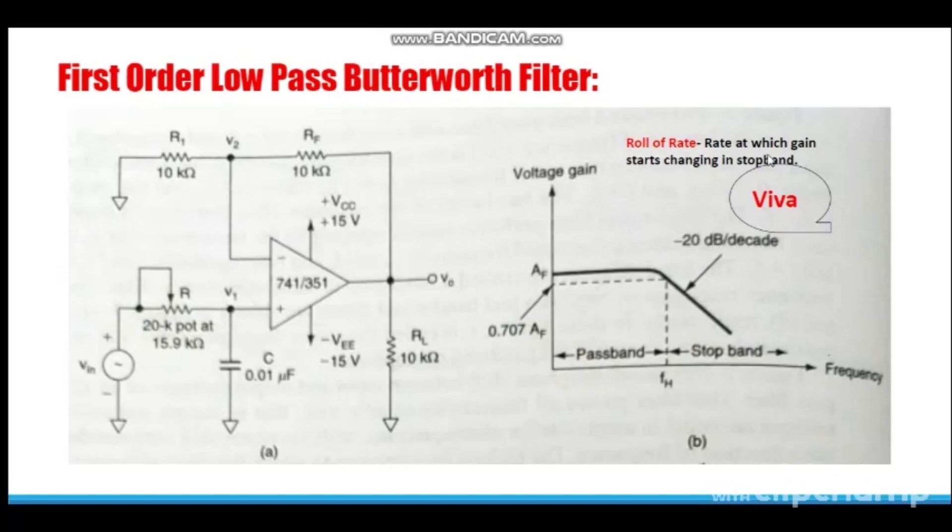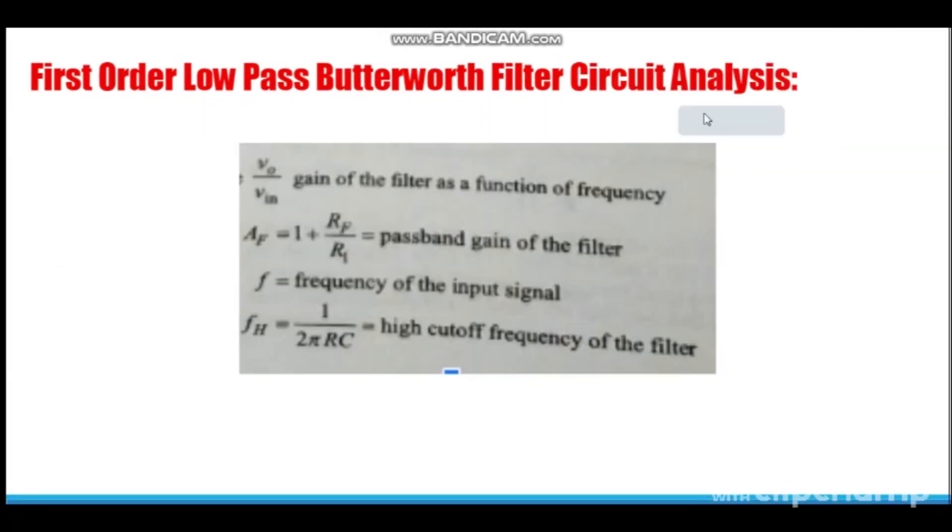So here there is a term which is important, that is roll-off rate. What is roll-off rate? The rate at which the gain of the filter starts changing in the stop band region is known as roll-off rate. See here the gain is decreasing in the stop band region in case of first order low pass filter, and it is decreasing at the rate of 20 dB per decade. As it is decreasing we have written a minus sign. That is roll-off rate of this filter is minus 20 dB per decade.